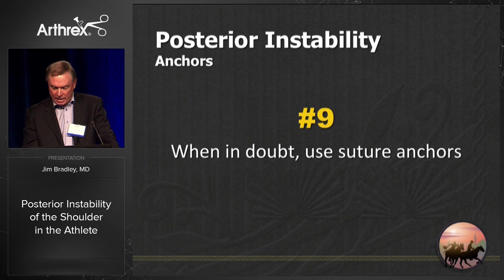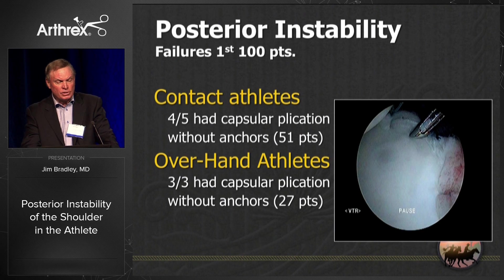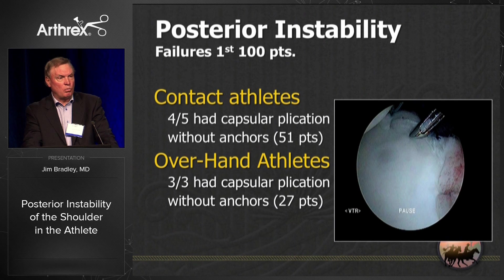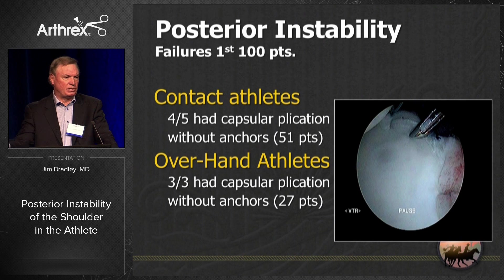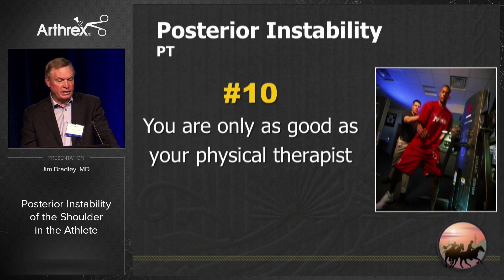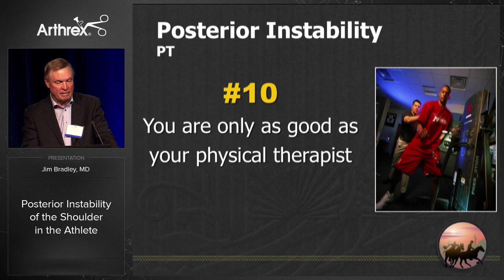The ninth thing I learned is when in doubt, use suture anchors. In my first 100 contact athletes, four out of five failed without suture anchors. In my overhead athletes in the same group, three out of three failed — and the next study was the same. I use suture anchors. The tenth thing is you really don't have to change your therapist — you're only as good as your physical therapist. You don't have to change, but finding the right therapist is really important.